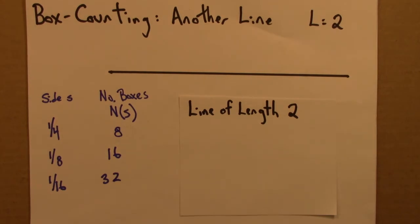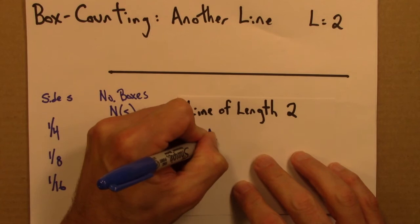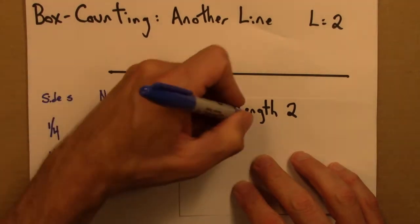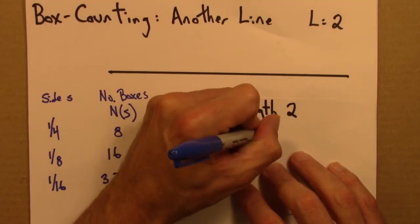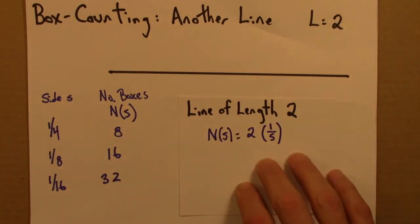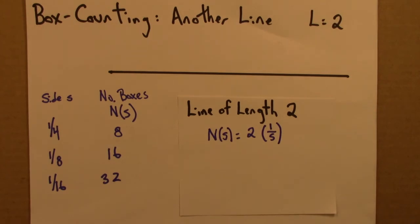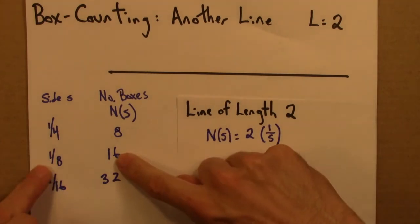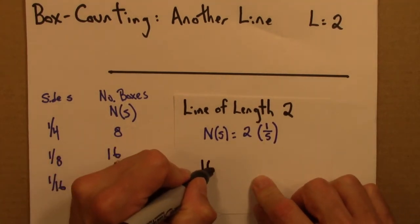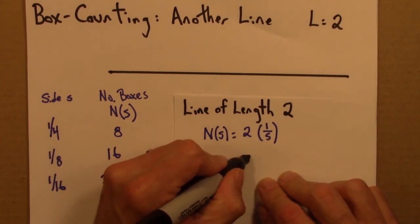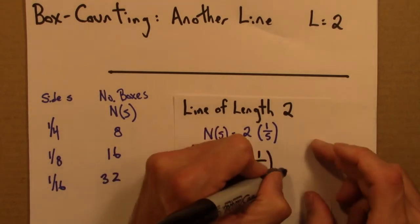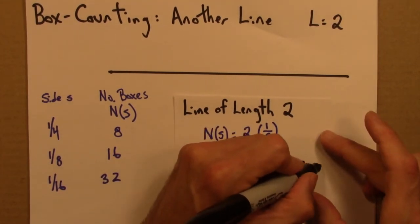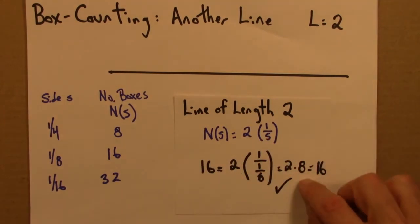And so that suggests to me that we're going to have the following relationship: N(s) = 2 × (1/s). So let's check. Let's verify this. Let's try this pair. Is 16 equal to 2 × (1/1/8)? Well, that's 2 × 8, which is indeed 16.